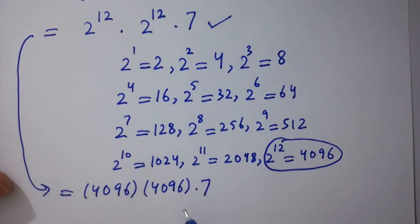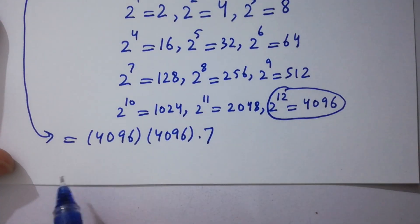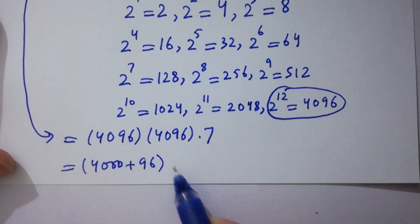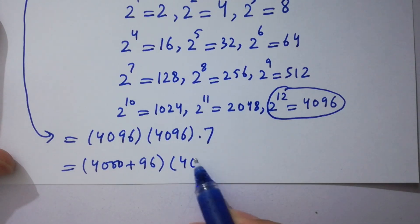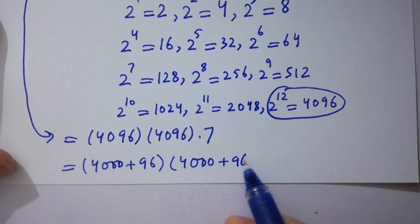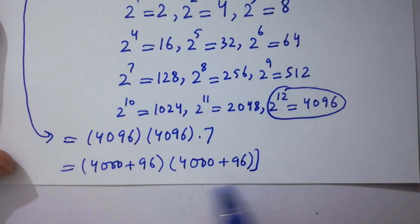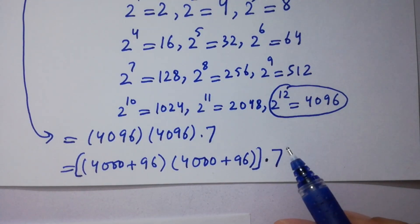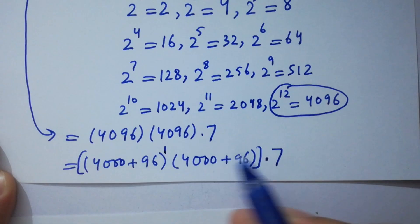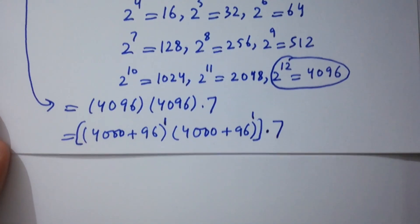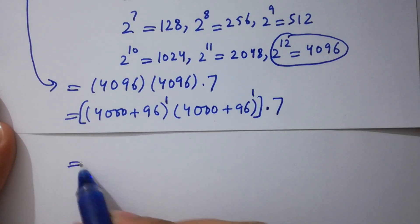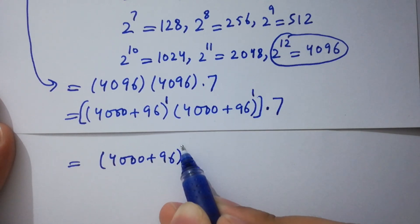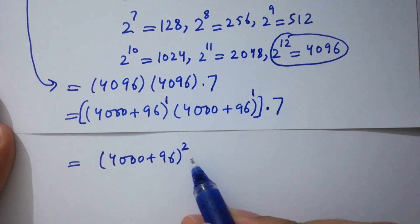I hope you understood. This can be written as (4000 + 96) and here (4000 + 96) times 7 as it is. Both factors have power 1, and since the base is the same, we add the powers. So it will be (4000 + 96) to the power 2, times 7.